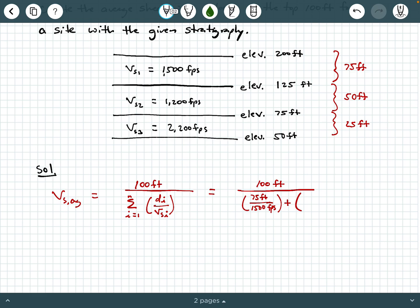Only about 25 feet of that, right? So right here is going to be elevation 100, right? So we're really only interested in this 25 feet that is within the top 100 feet. So we're going to say plus 25 feet divided by 1,200 FPS.